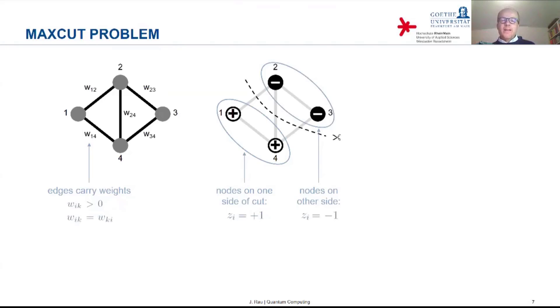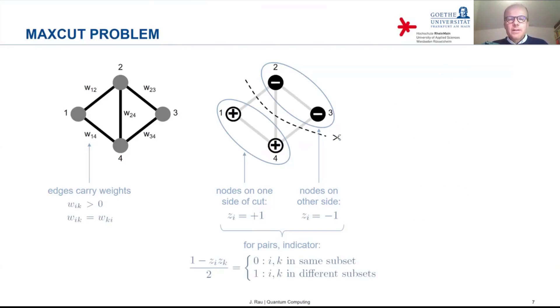If we do it in this way, then actually this allows us immediately to define an indicator function, which tells us which of the edges were cut. Let's look at a pair of nodes labeled I and K. And consider the function 1 minus Z_I Z_K over 2. If the two nodes are in the same subset, then this indicator function vanishes. If they are in different subsets, then the product of the Z's is minus one, and the indicator function has the value one.